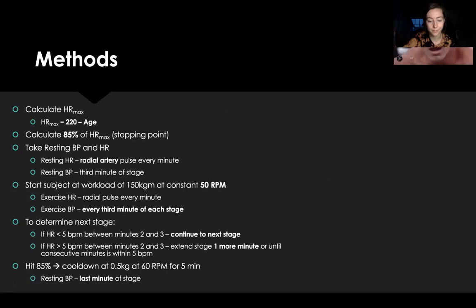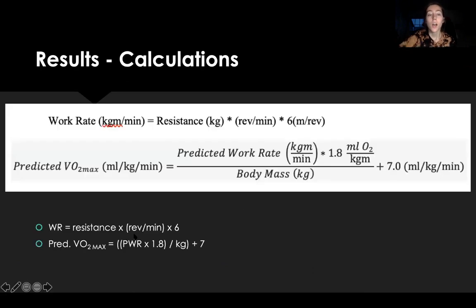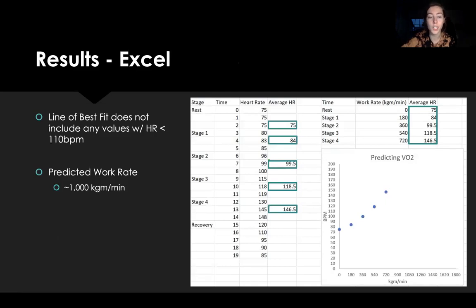The methods are listed on screen — you can pause and read those. This is Marcelo, our participant — pause to read his details. For the calculations needed for this test, I won't go through them in detail; email me if you have specific questions. For your Excel sheet, do not include any values below 110 beats per minute — only values at or above 110.